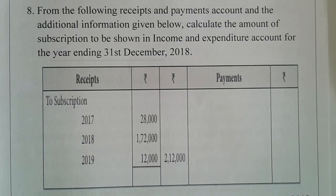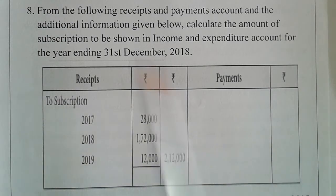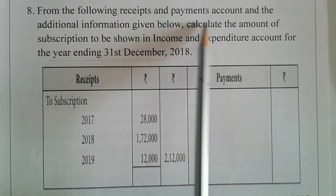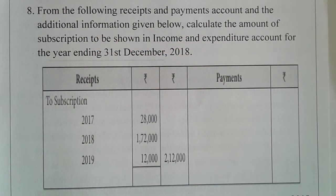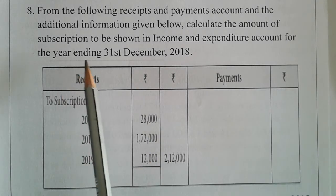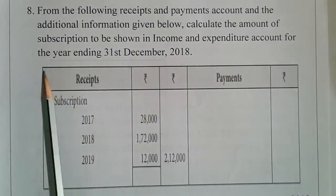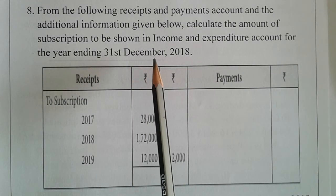Welcome to BlueStars online class account section. We are going to do exercise number 8 from chapter 2. From the following receipt and payment account and the additional information given below, calculate the amount of subscriptions to be shown in the income and expenditure account for the year ending 31 December 2018.